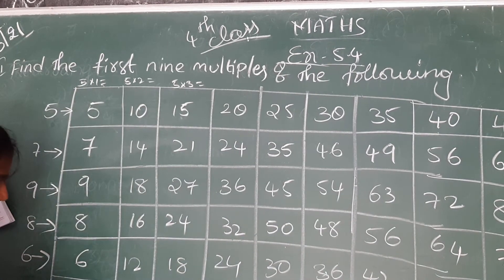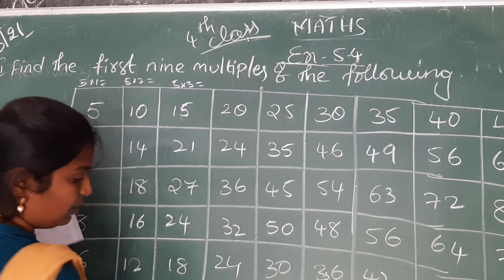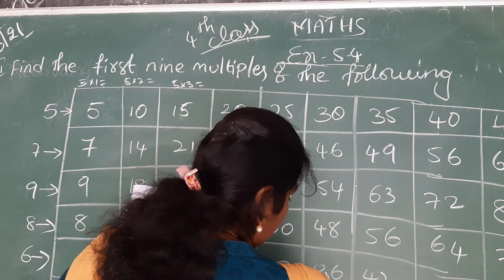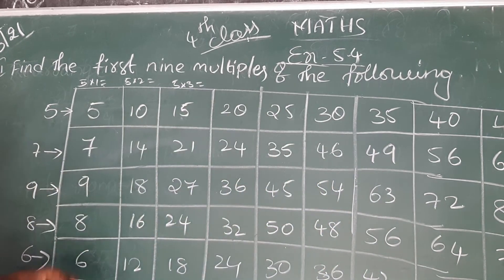Next go for 3 table. 3 ones are 3. 3 twos are 6. 3 threes are 9. 3 fours are 12. 3 fives are 15. 3 sixes are 18. 3 sevens are 21. 3 eights are 24. 3 nines are 27. So like this.